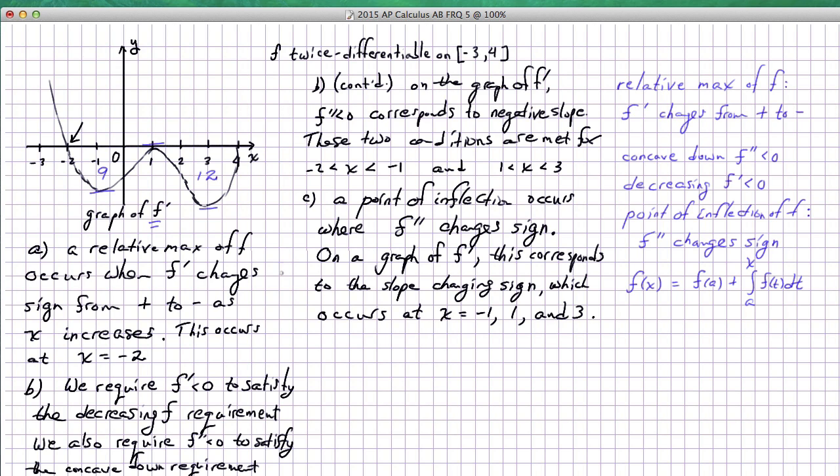Now the final part of this free response question involves use of the accumulation form of the fundamental theorem of calculus. Namely that if we want to know the value of a function at a point, we have to start at some known point and then add to it the change of that function from the known point to the point where we would like to know the new value. And so we're just going to use that three different times to respond to question d.